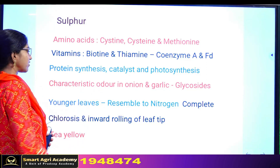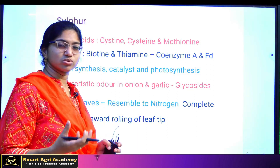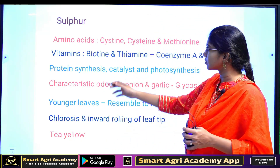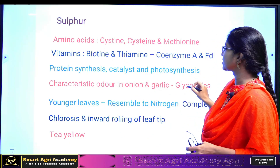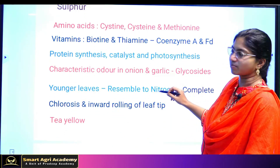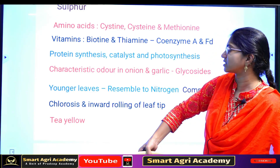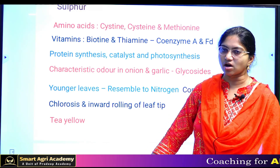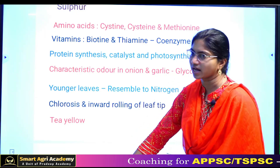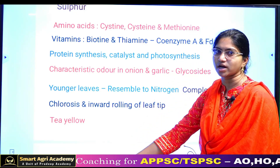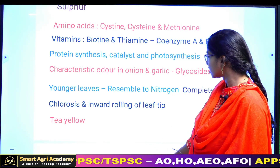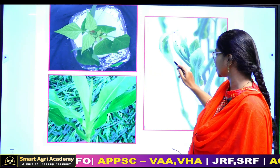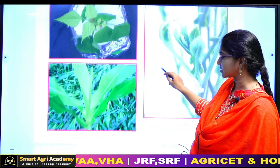Next is sulfur. Sulfur is used in amino acid synthesis — cysteine and methionine. Vitamins biotin and thiamine, and coenzyme A also require sulfur. Sulfur is involved in protein synthesis. Sulfur deficiency appears in young leaves as yellowing — similar to nitrogen deficiency but in young leaves. The young leaves turn yellow due to reduced chlorophyll synthesis.